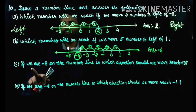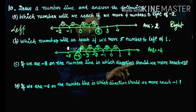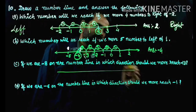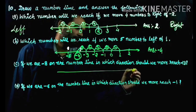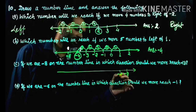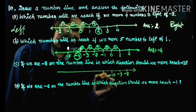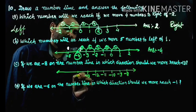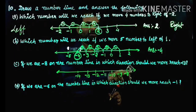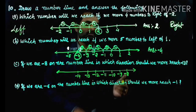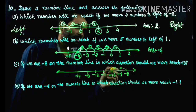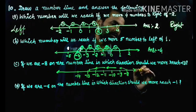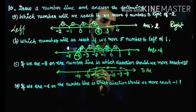If you are at minus 8 on the number line, in which direction should you move to reach minus 13? Draw the number line: minus 8, minus 9, minus 10, minus 11, minus 12, minus 13. Your position is minus 8 and you need to reach minus 13 — you go in the left direction.